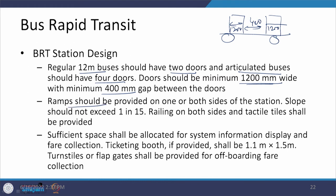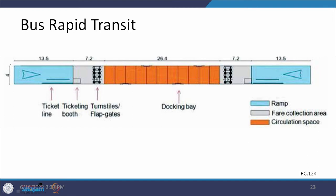Ramps should be provided on one or both sides of the platform so passengers can reach the higher level, with railings for protection. Tactile tiles must be provided from start to end and the ramp slope shall not exceed 1 in 15, which is the most accessible slope for wheelchair users. Sufficient space shall be allocated for system information displays and fare collection; ticketing booths if provided shall be 1.1 meters by 1.5 meters.